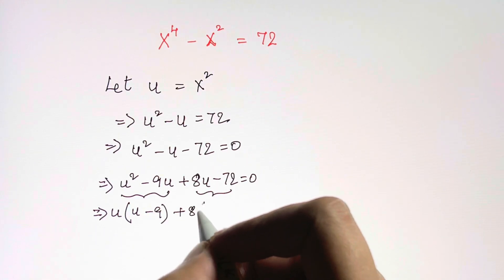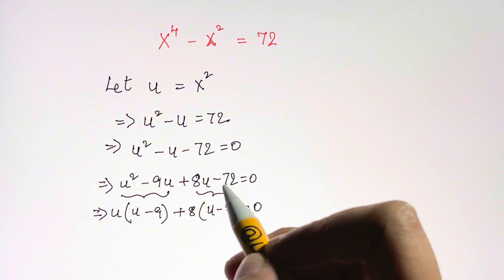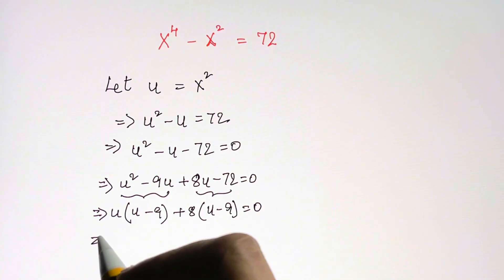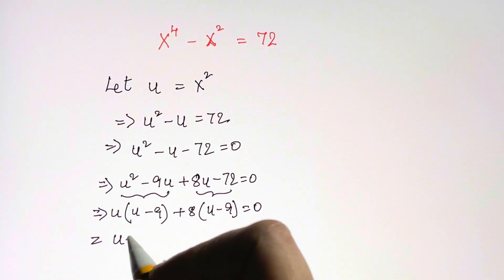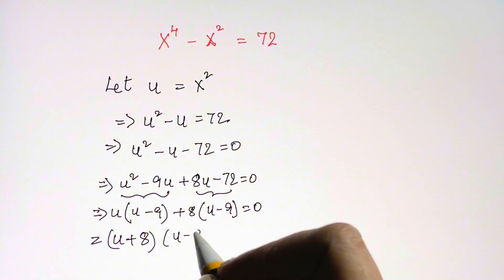Now if you multiply it back, you're going to get the same thing. So that's equal to u plus 8 times u minus 9. u minus 9 is common so we've taken the other factor, which is u plus 8.